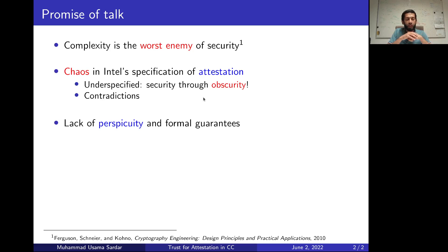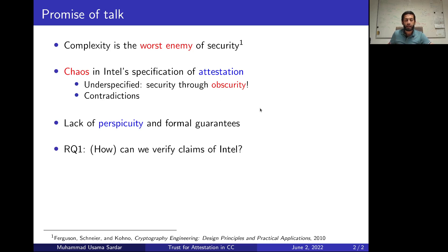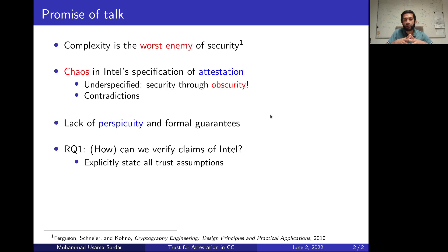So, there is a need to have some perspicuity or some formal guarantees in order to understand this process of attestation. Therefore, the research question that this thesis tries to answer is: can we verify the claims of Intel? If yes, then how? And can we actually come up with proofs that explicitly state all the trust assumptions used by Intel?